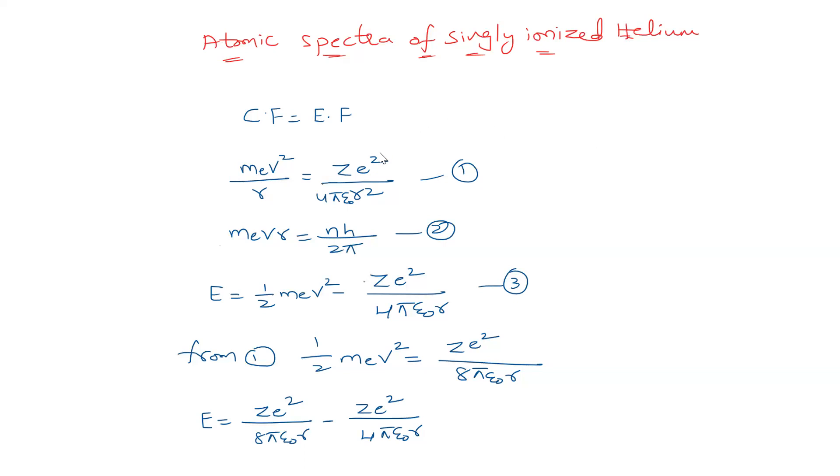Here Ze squared is coming because Ze into e and this is the first equation. The second equation is the angular momentum is quantized which is equal to nh by 2 pi.